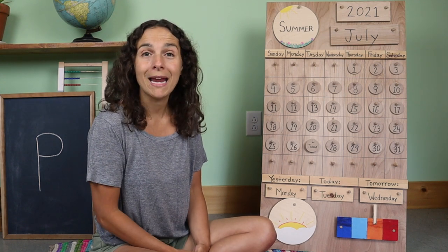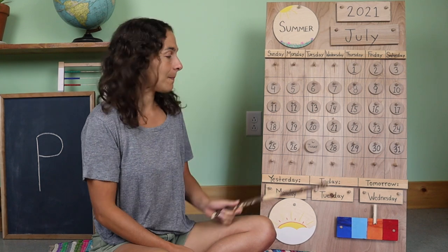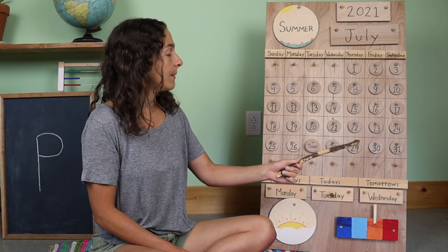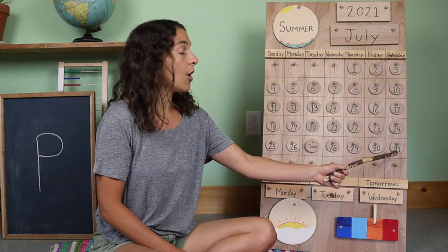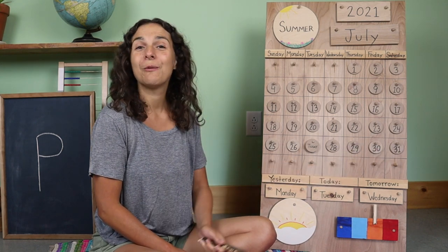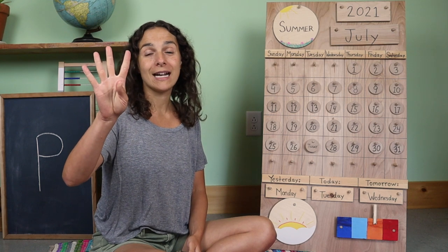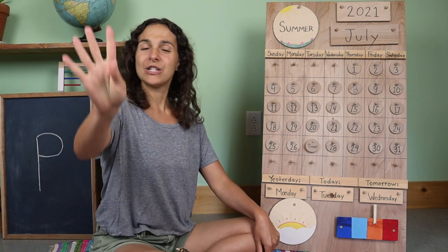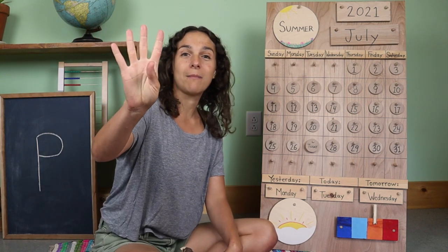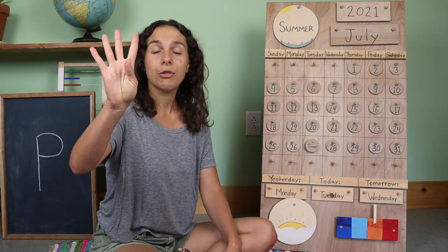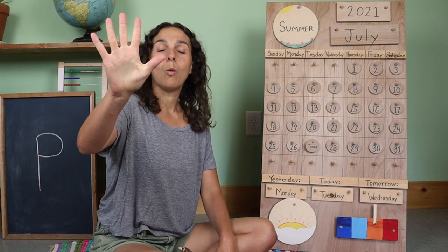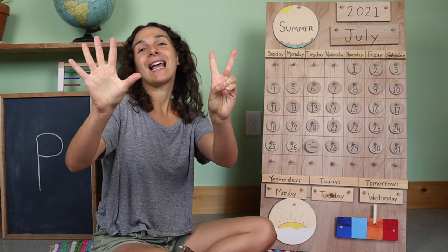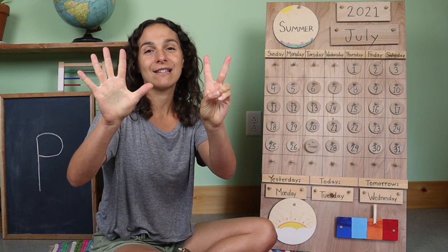Now let's count the remaining days left in the month. After today, we only have one, two, three, four — we only have four more days left in the month of July, and then we will begin a brand new month. So if you keep your four fingers up like this but add three more — one, two, three — now we have seven fingers, and it looks like we're ready to sing the Days of the Week song.